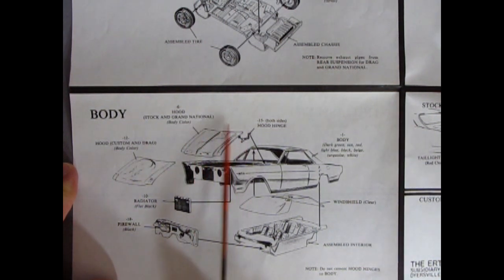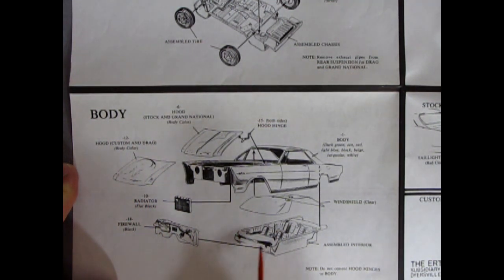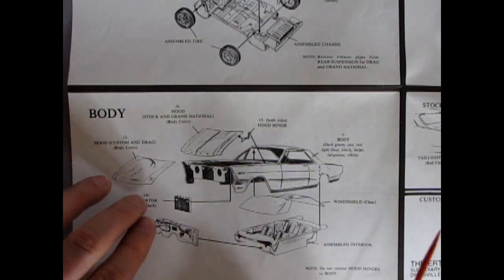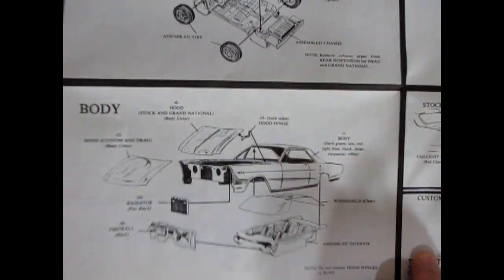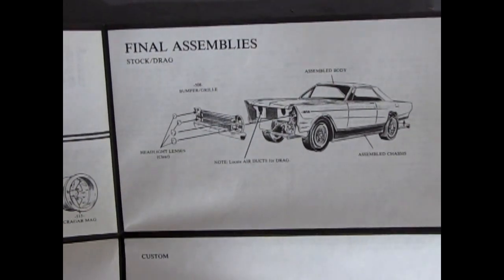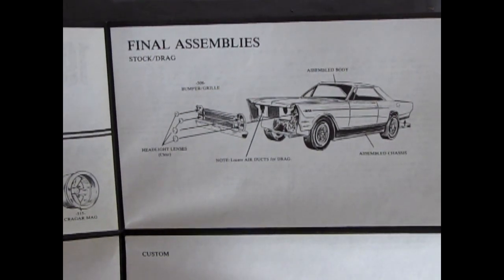And next up we have the body going together. And they give you your stock or your NASCAR style hood. And then the custom and the drag one with that teardrop shape. Sort of like the Ford Thunderbolt. And your interior here, which is the interior tub. And your front windshield, which has got front and rear windshield, which has got the bars in between. Your firewall and your radiator going in there.